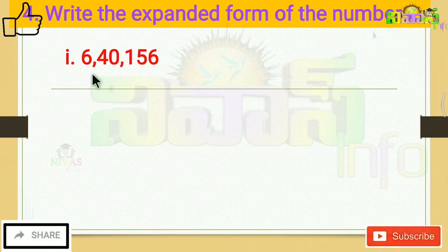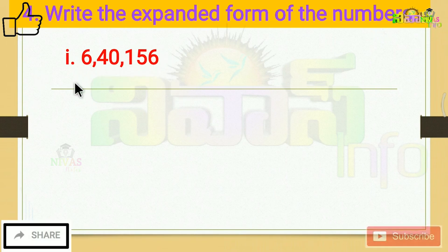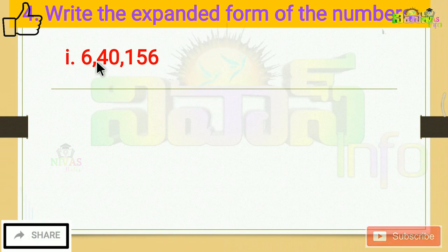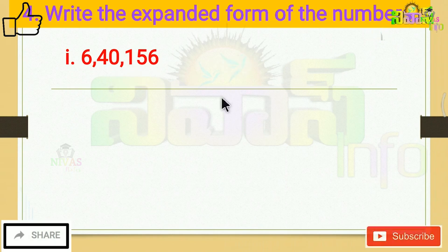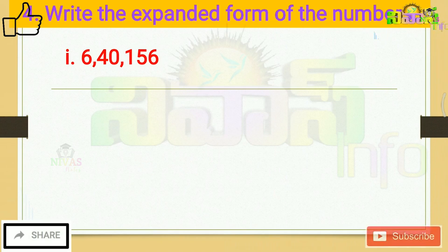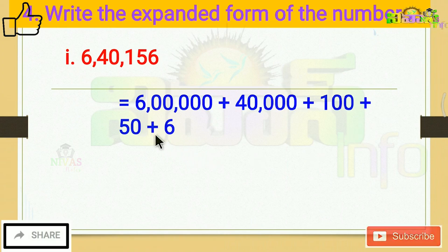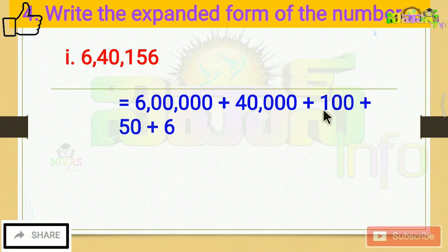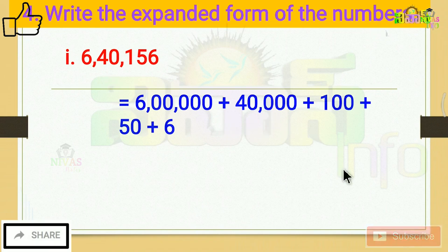For example, the first problem here is 6,40,156. There is a lakh place. The expanded form is: 6 lakhs plus 40,000 plus 100 plus 50 plus 6. It means to separate the value in each place.